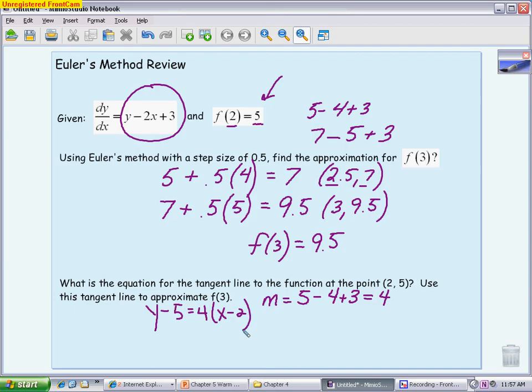That's my tangent line. If I want to simplify it and get it into slope intercept form, I can. If I want to stop there, I'm already getting full credit. Now we're going to use this tangent line to approximate what happens when I put 3 into my function. So 3 is my x value, so I'm going to say, well, I'm going to have y minus 5 equals 4 times 3 minus 2.